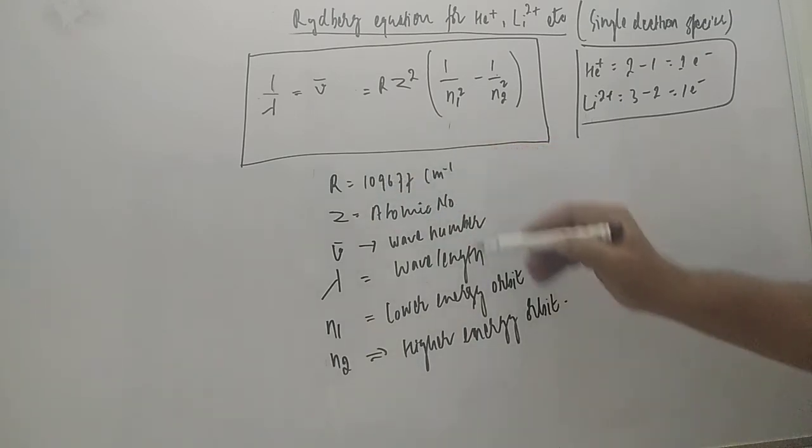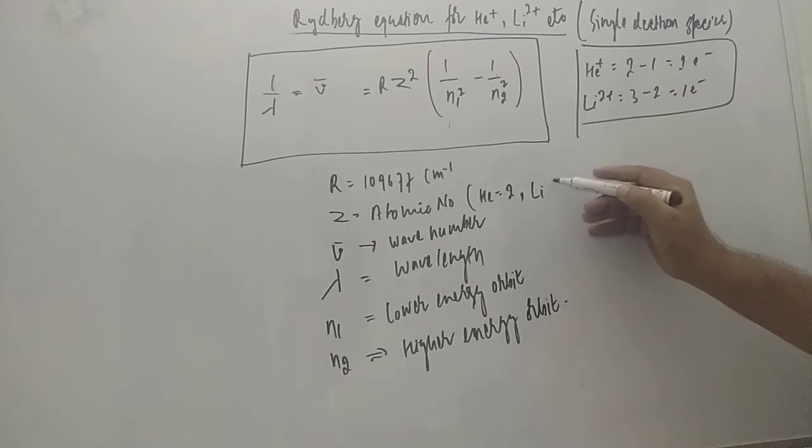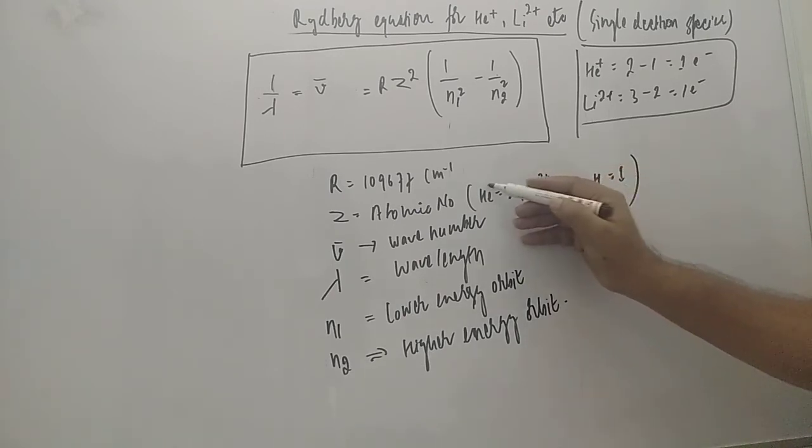Z is atomic number. For helium, you have to use two. If you talk about lithium, you have to use three. And if you talk about hydrogen, it is one. So no need to write here. It will be lithium two plus and helium will be positive.